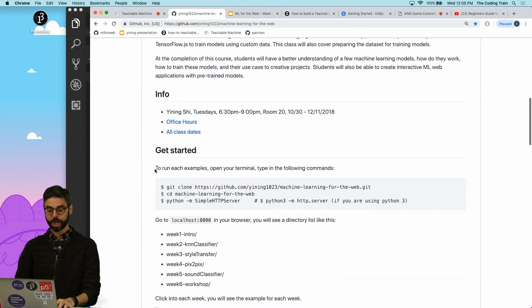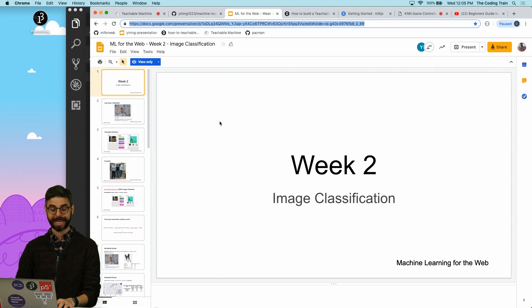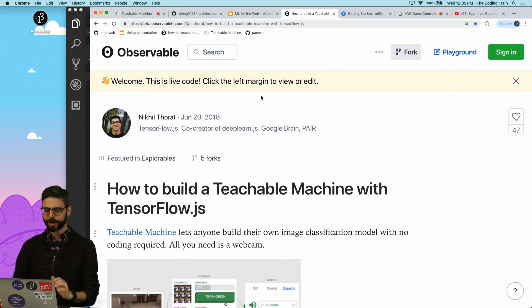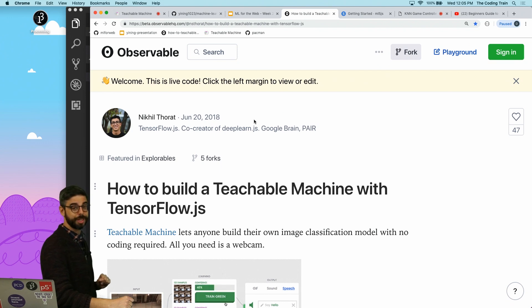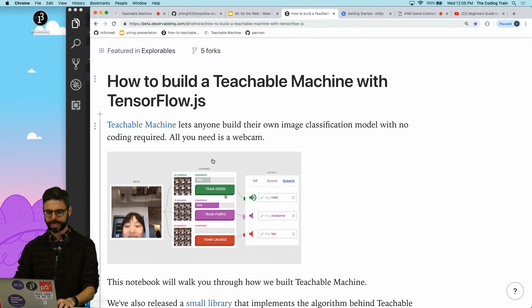Yining Shi has been teaching a class called Machine Learning for the Web at ITP NYU. Thank you so much to Yining for allowing me to be inspired by and use your materials. I highly recommend you look through this syllabus and examples, and there's also a whole presentation about KNN classification.